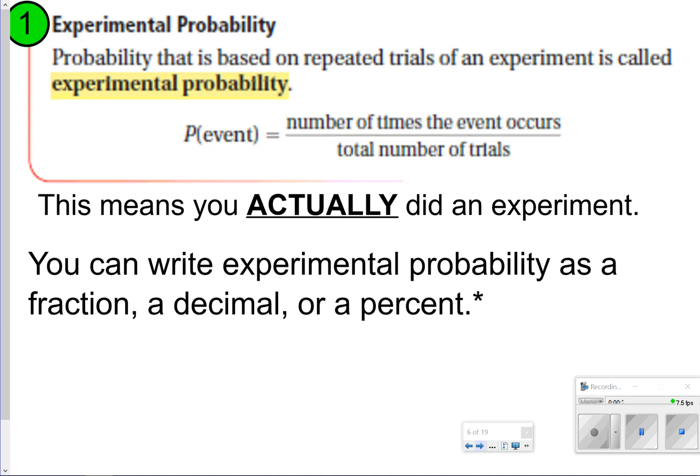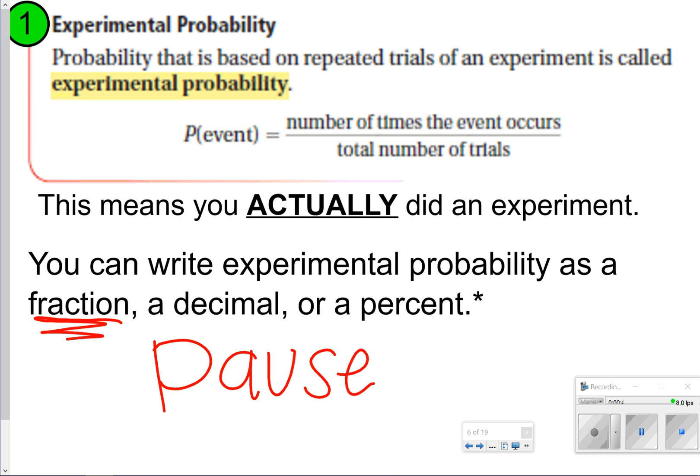The first thing we're going to write down is experimental probability, and that is when you actually did an experiment and you have the data to prove it. You can write experimental probability as a fraction, decimal, or percent, but the main way we're going to be seeing the probability written today is as a fraction. Go ahead and pause the video now to write down what you see on the board or screen with your vocabulary term, and once you're done, click play so we can check and try some questions.